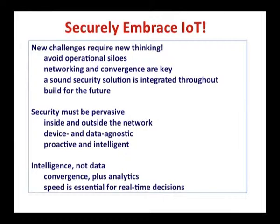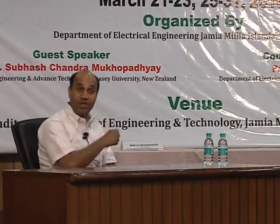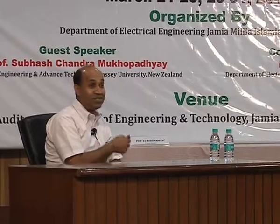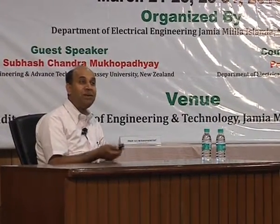For the future we need a sound security solution, and security must be pervasive — both inside and outside the network, at the device level as well as data level. It should be proactive and intelligent. You also have to think of data convergence, analytics, and speed. Sometimes if you have too much security, it may be very slow, but speed is essential for real-time decisions. For those working on security, there are lots of new research areas, but it is challenging — you always have to think outside the box.